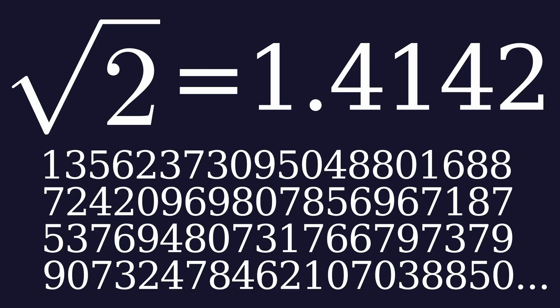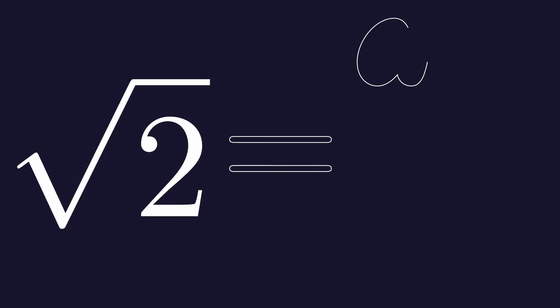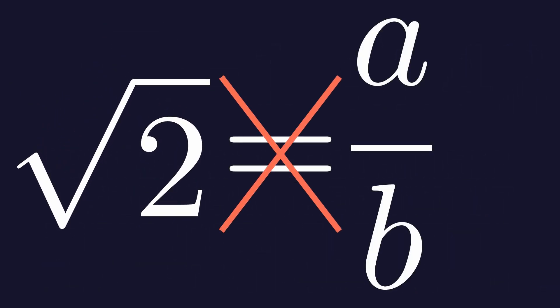An irrational number is a type of real number which cannot be represented as a simple fraction. It cannot be expressed in the form of a ratio. But how to prove that? How do we know that the decimal representation of the square root of 2 doesn't end?